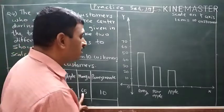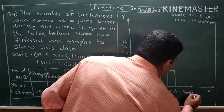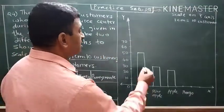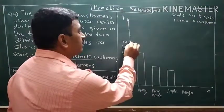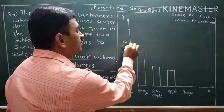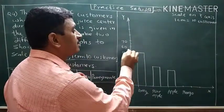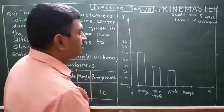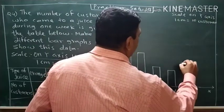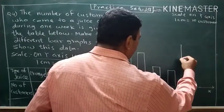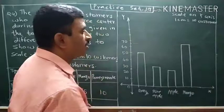For mango, sixty-five customers are coming. We are giving one centimeter distance, and we have to show sixty-five. After sixty, there is a five-unit gap. In between seventy and sixty, at the middle, there will be a small dark line — that is sixty-five. So we will mark it first and then draw the bar for mango.